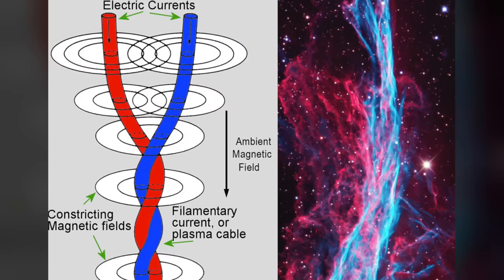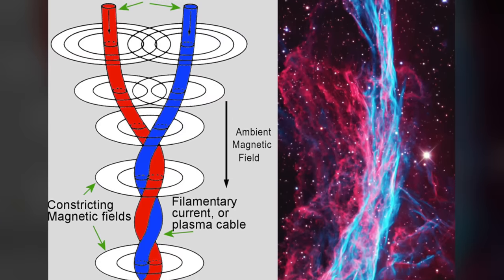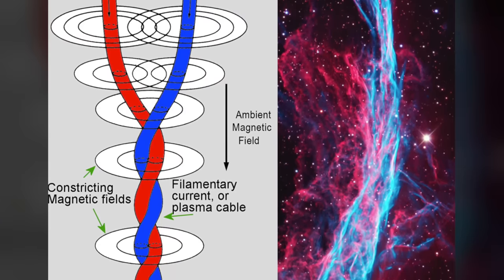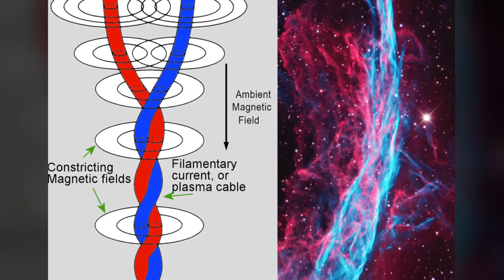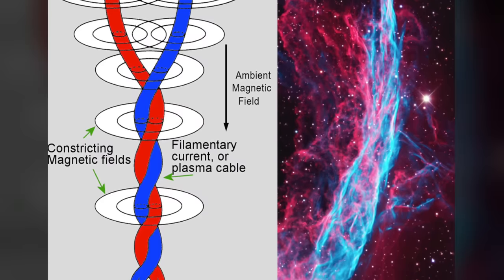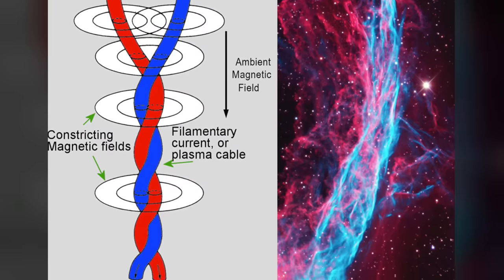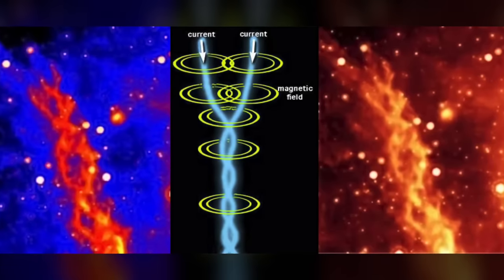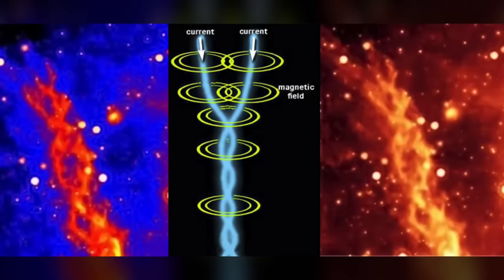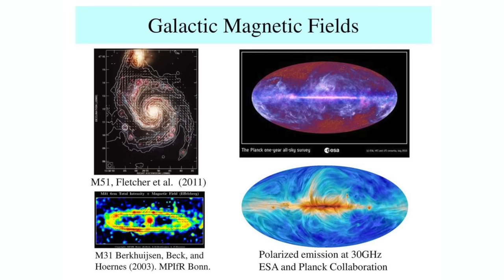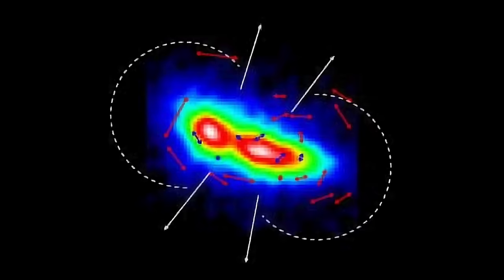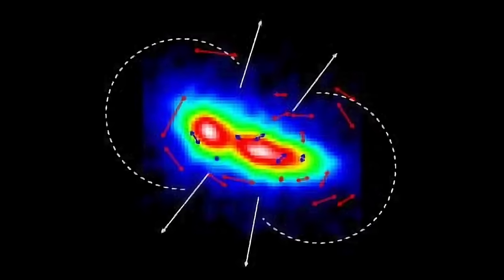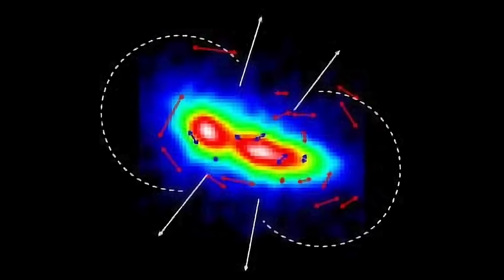Now, if what we're looking at with all these filaments truly are Birkeland currents, as proponents of the electric model of space suggest, then consider this: we're only seeing the visible structures. All the rest of the circuits should generate magnetic fields, and those can be mapped. And that would help us grasp the extent of some of these circuits.